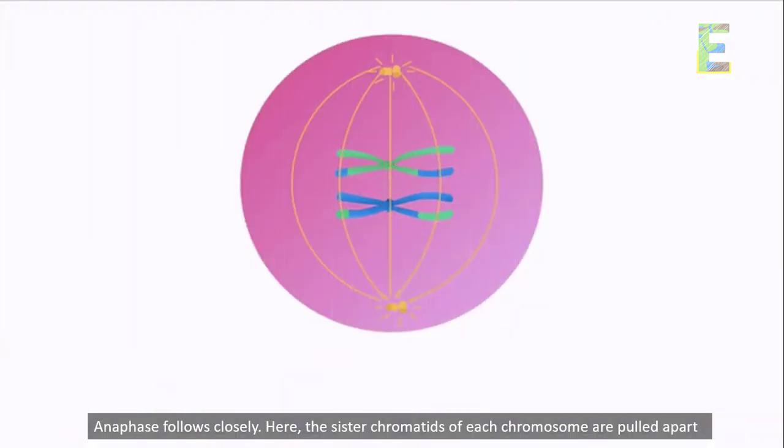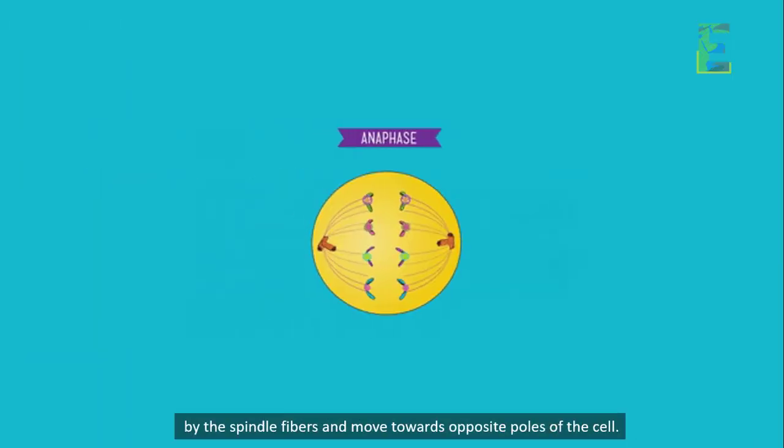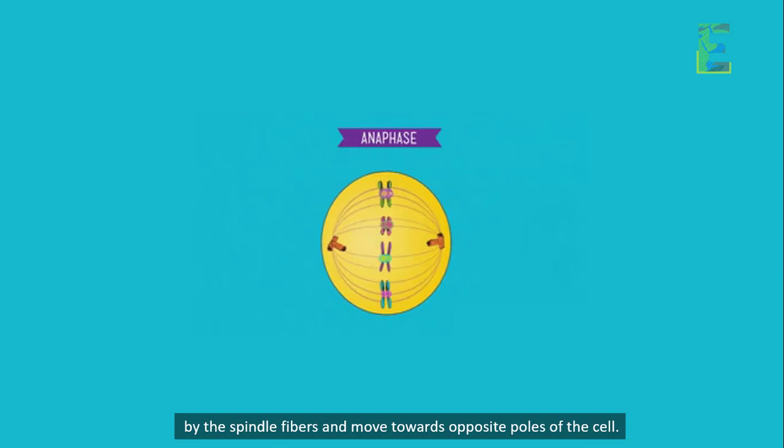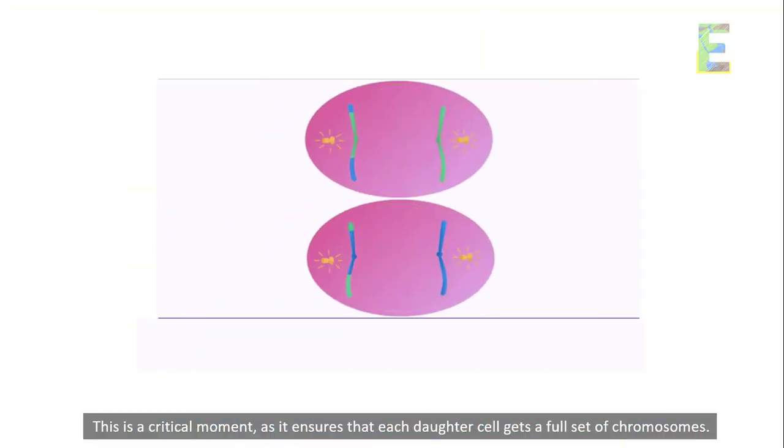Anaphase. Anaphase follows closely. Here, the sister chromatids of each chromosome are pulled apart by the spindle fibers and move towards opposite poles of the cell. This is a critical moment, as it ensures that each daughter cell gets a full set of chromosomes.